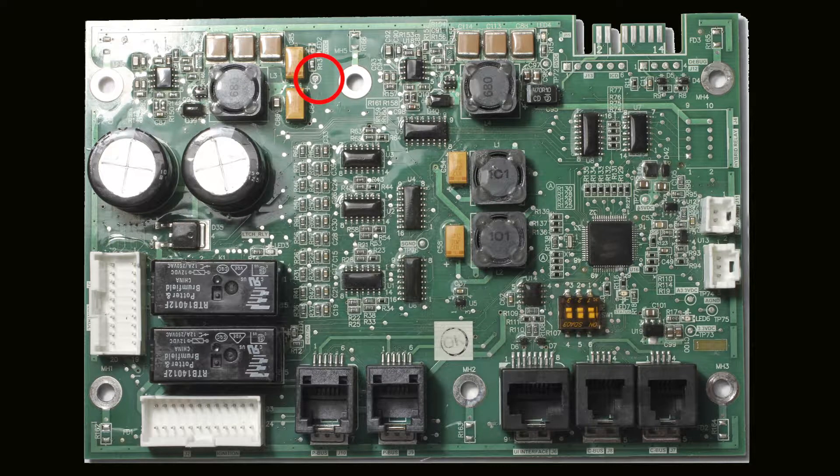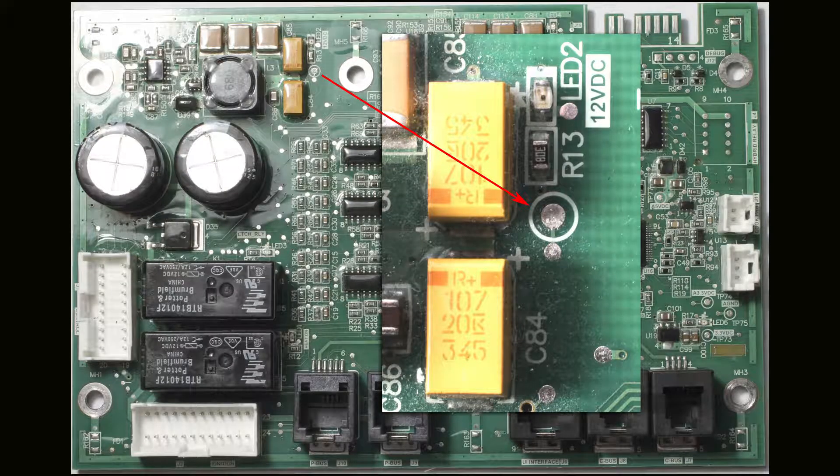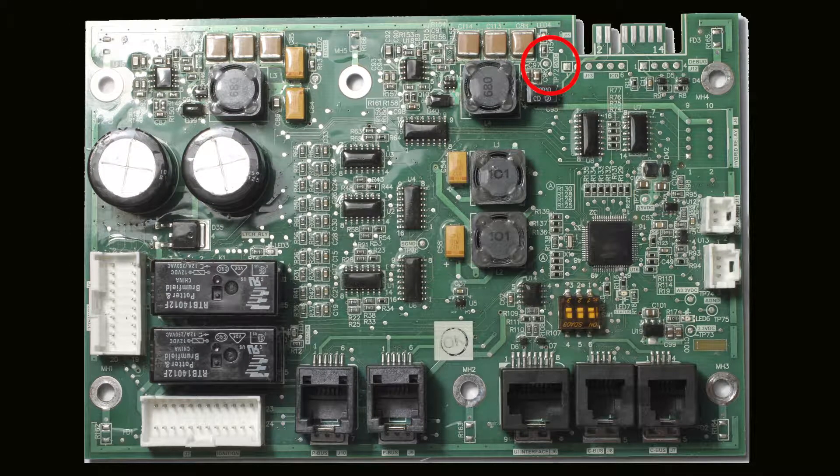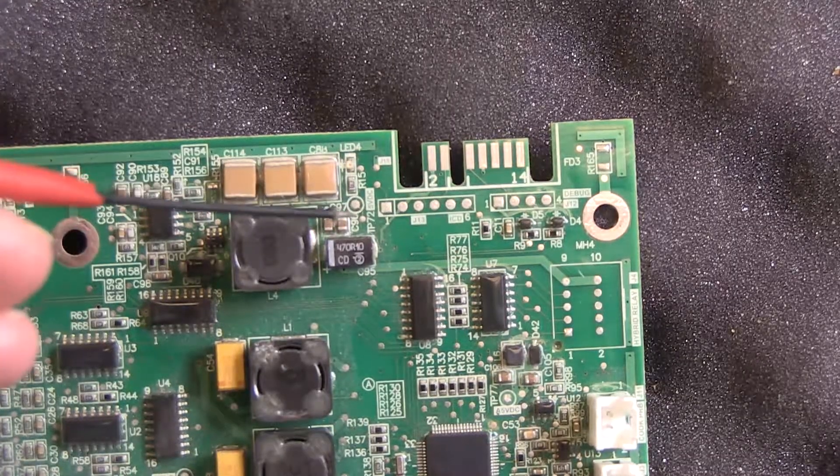With the needle extensions, check for 12 VDC between this test point and ground. Check for 5 VDC on this test point and ground. Again, needle extensions are essential.